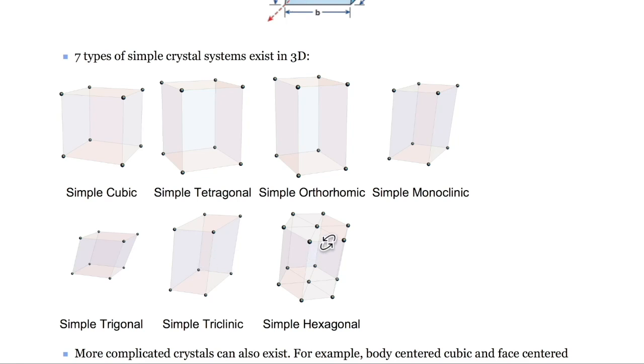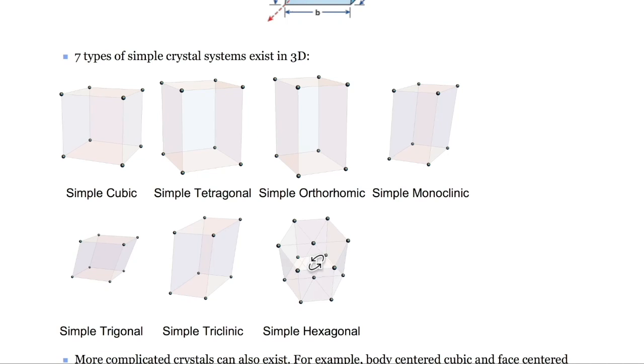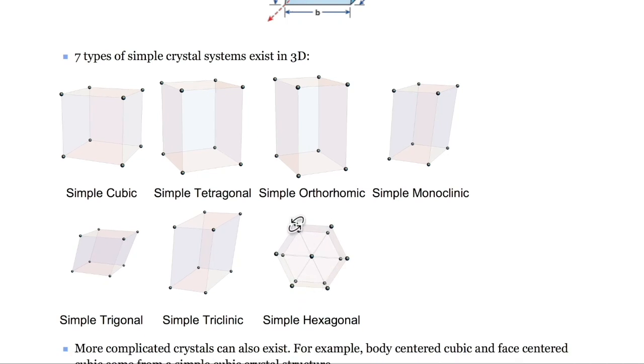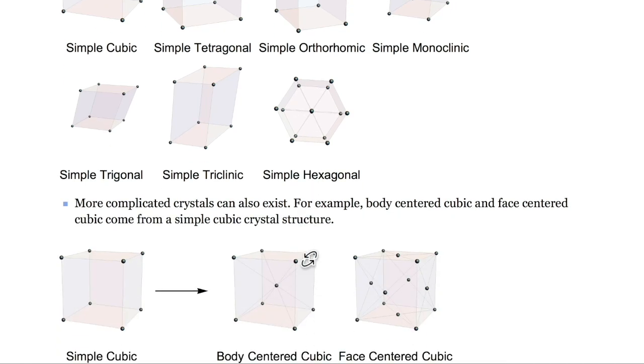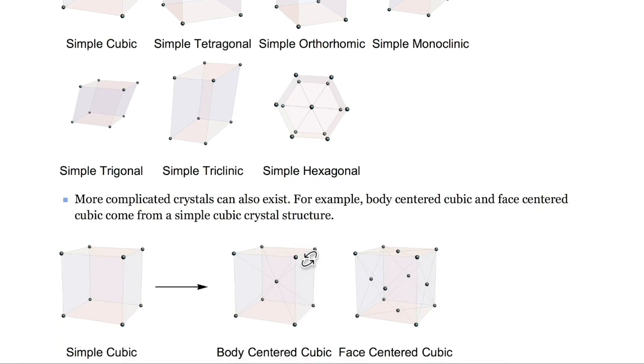One thing to note about this hexagonal crystal system is it's actually made up of three unit cells, which you can see here. In 3D, there are also non-simple crystal systems. With the non-simple crystal systems added, there are 14 total possible crystal structures. For example, body-centered cubic and face-centered cubic are non-simple cubic crystals.